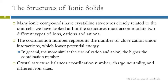The structures of ionic solids. We've talked about those different types of packing structures, and now we're going to apply that to actual ionic compounds. Many ionic compounds have crystalline structures very closely related to the structures we looked at. The difference is that instead of all the spheres being exactly the same, we have two different kinds of ions — cations and anions — and we may have different numbers; it might not be a one-to-one ratio, which affects the crystal structure.